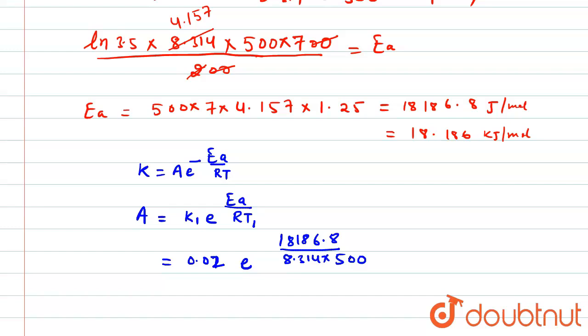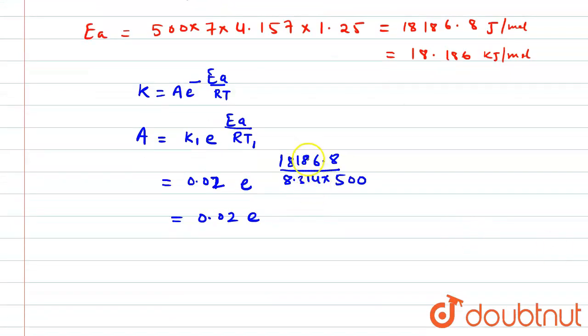So we have to find 18,186.8 divided by 8.314, and that will be finally divided by 500. So after division, the value is coming out to be, we have 0.02 e to the power, this value is 4.3.